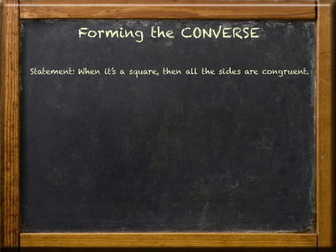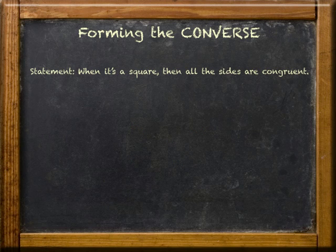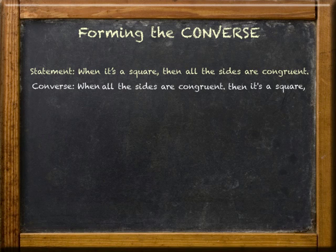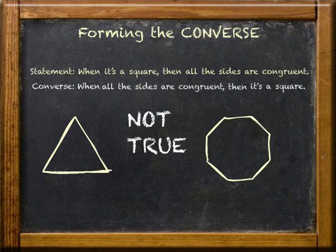So let's try the last one. Your job is to form the converse and then figure out if the converse is true or false. Here's what I got. That converse is not true — could be an equilateral triangle or a regular octagon.